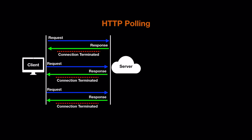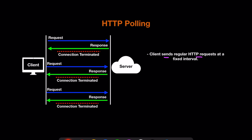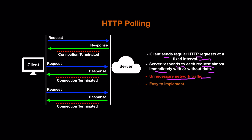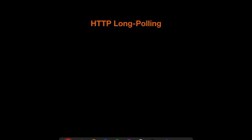In HTTP polling, the client sends regular HTTP requests at a fixed interval. The server responds to each request almost immediately — with or without data. If it has data it sends it; if not, it returns immediately with no data. As a result, the client keeps calling the server and we generate a lot of unnecessary network traffic. The good side is it's easy to implement using simple HTTP requests.